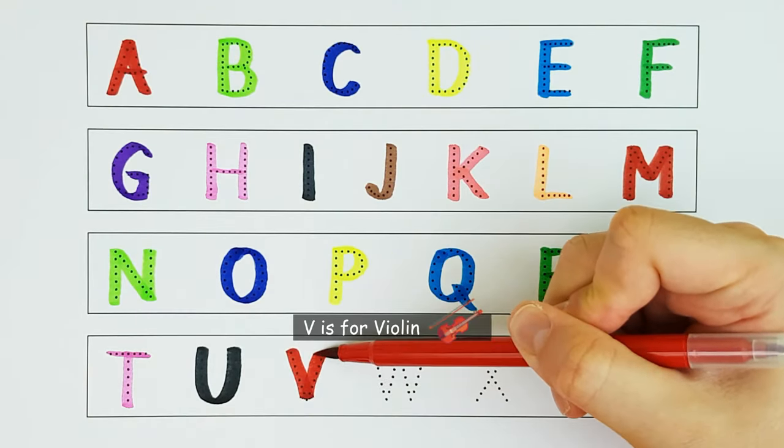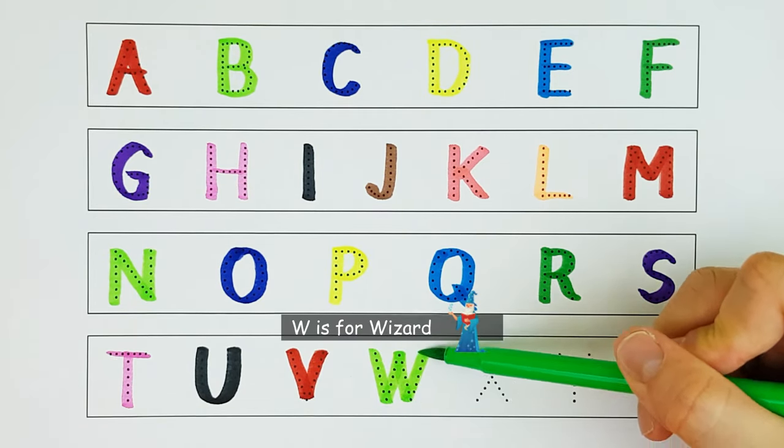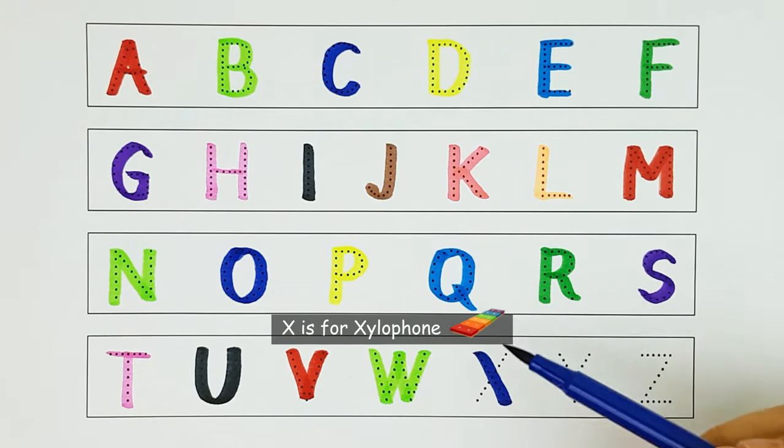V. V is for Violin. V. W. W is for Wizard. W. X. X is for Xylophone. X.